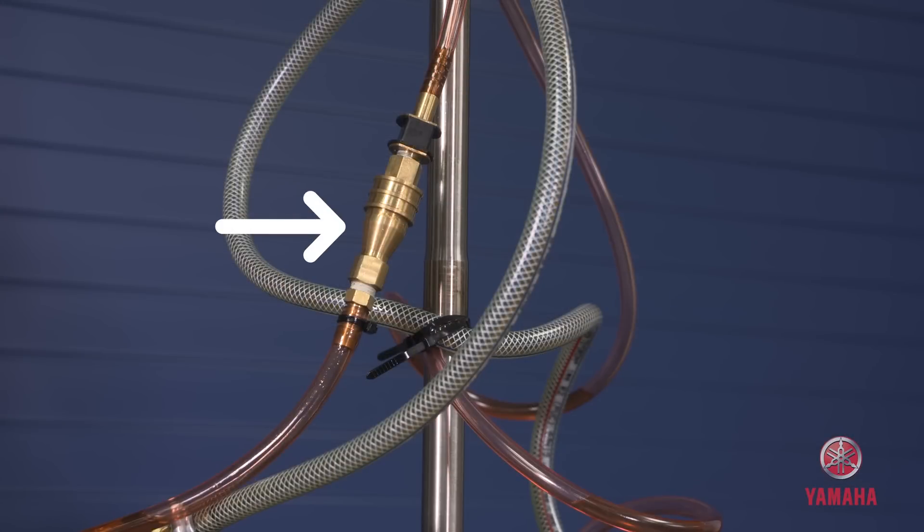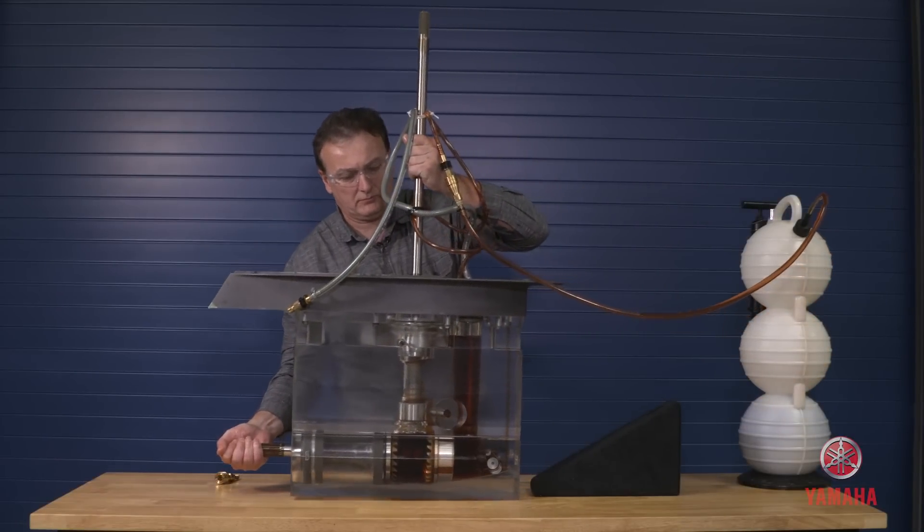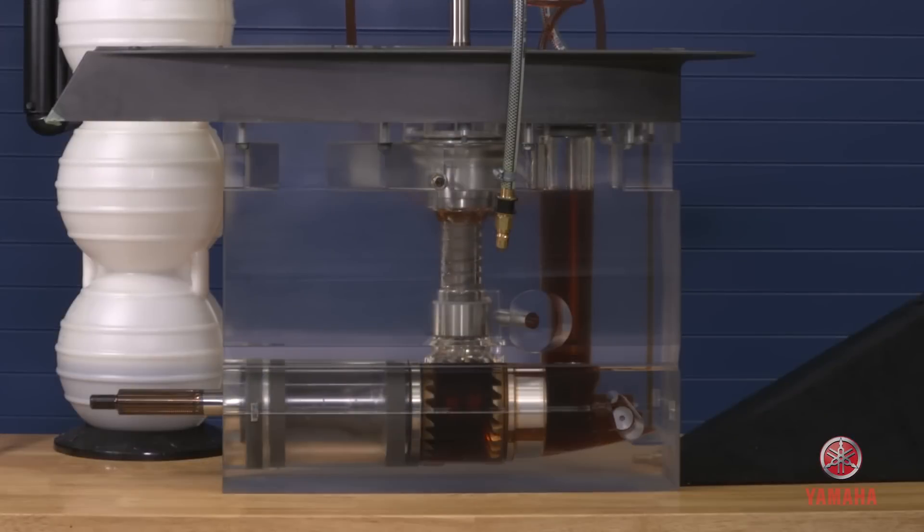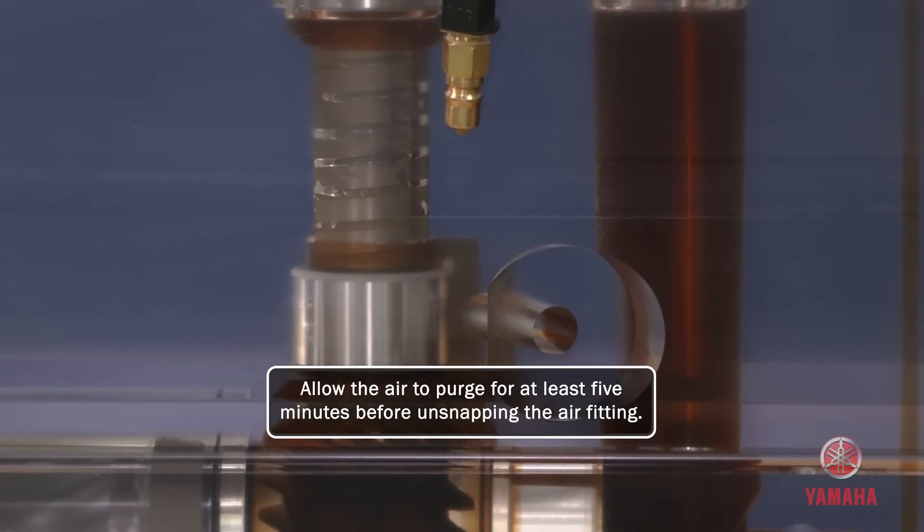With the air hose still attached, tilt the gear case back to a horizontal position. The oil level lowers as the air purges out of the gear case housing. Allow the air to purge for at least five minutes before unsnapping the air fitting.